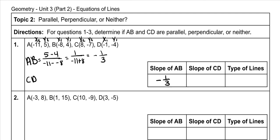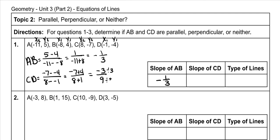Then the slope for CD: y2 minus y1 is negative 7 minus negative 4, and x2 minus x1 is 8 minus negative 1. The minus and negative turn into pluses, giving us negative 7 plus 4 over 8 plus 1. That's negative 3 over 9. Since 3 goes into both, we get negative 1 third. Because they are the same slope, these lines are parallel.